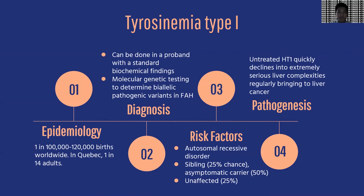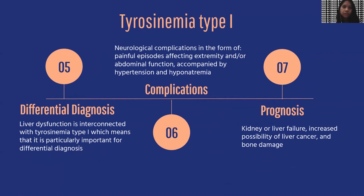Carrier testing for relatives at risk or conducting prenatal diagnosis for pregnancies at increased risk is necessary if both pathogenic variants are known within the family line. Untreated hereditary tyrosinemia quickly declines into extremely serious liver complications, regularly leading to liver cancer.